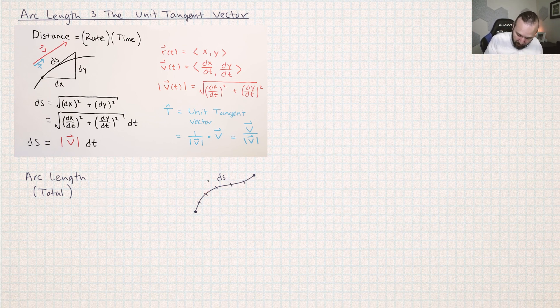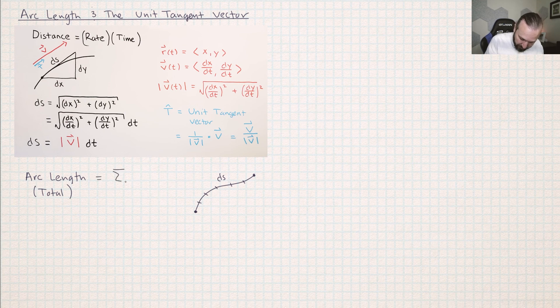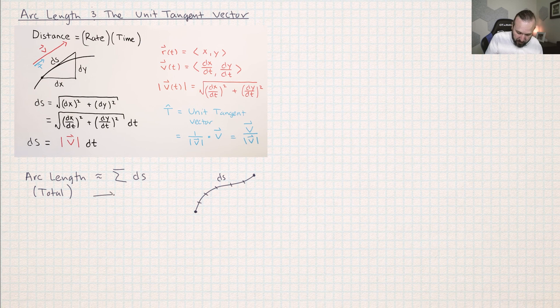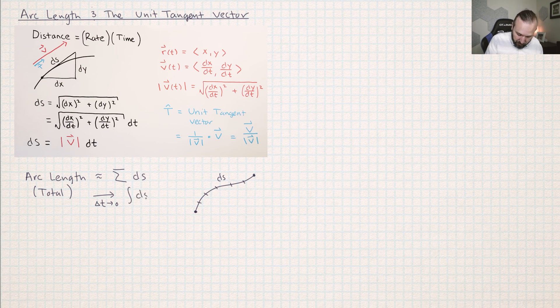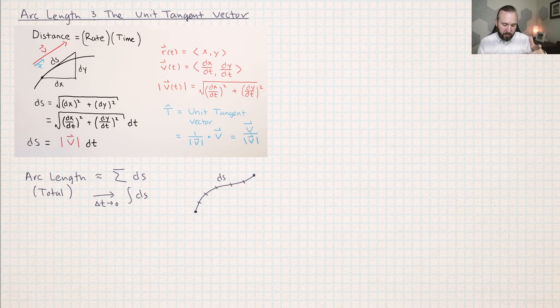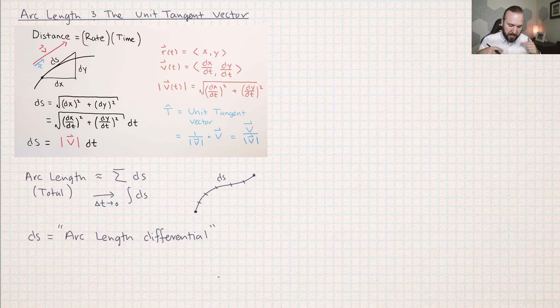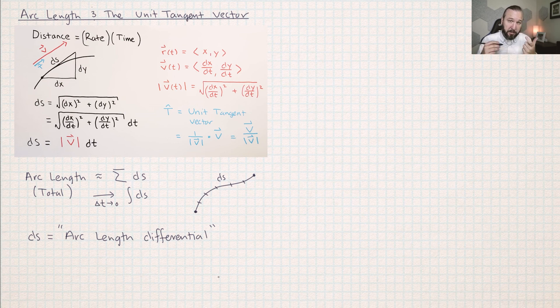So if we added up all of these little pieces of the path, I would get approximately equal to the total arc length. And then what you need to do is take the limit as delta t goes to zero and the sum will become an integral. And so we calculate the arc length traced out by a particle by integrating ds. We call this quantity ds the arc length differential. The idea is it's an approximation of a little piece of the arc and the word differential implies that we're using the tangent line to approximate that distance.